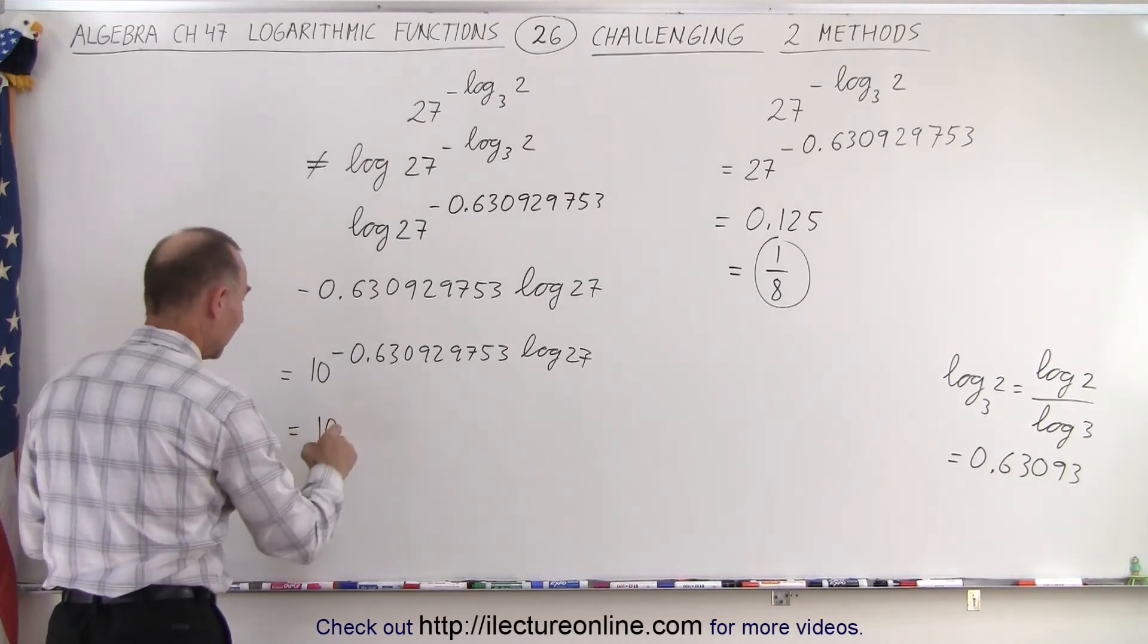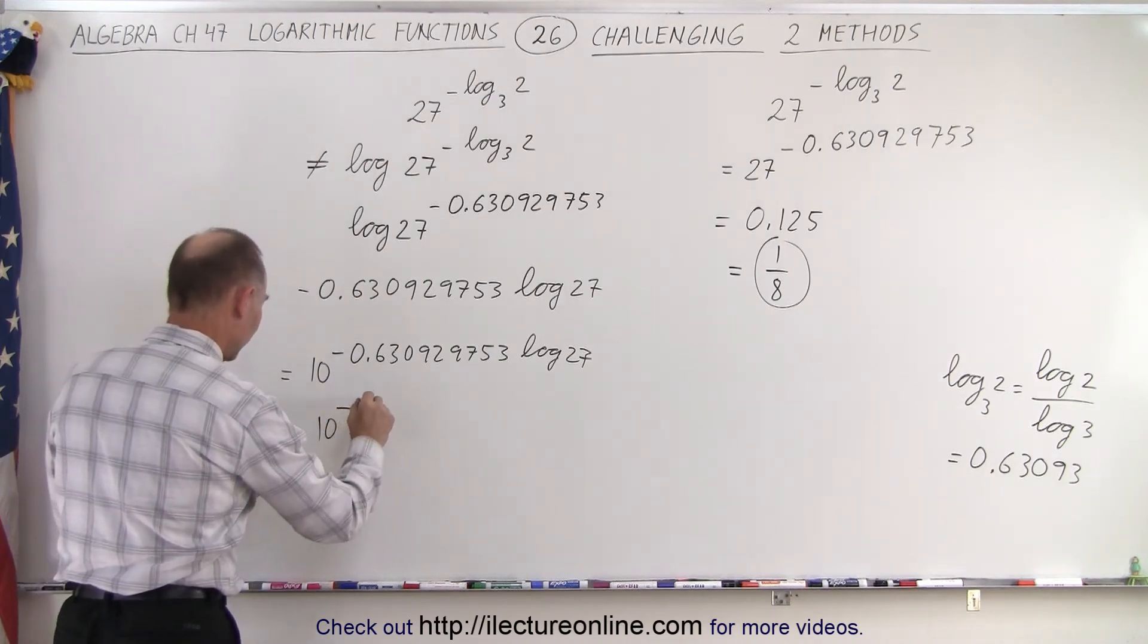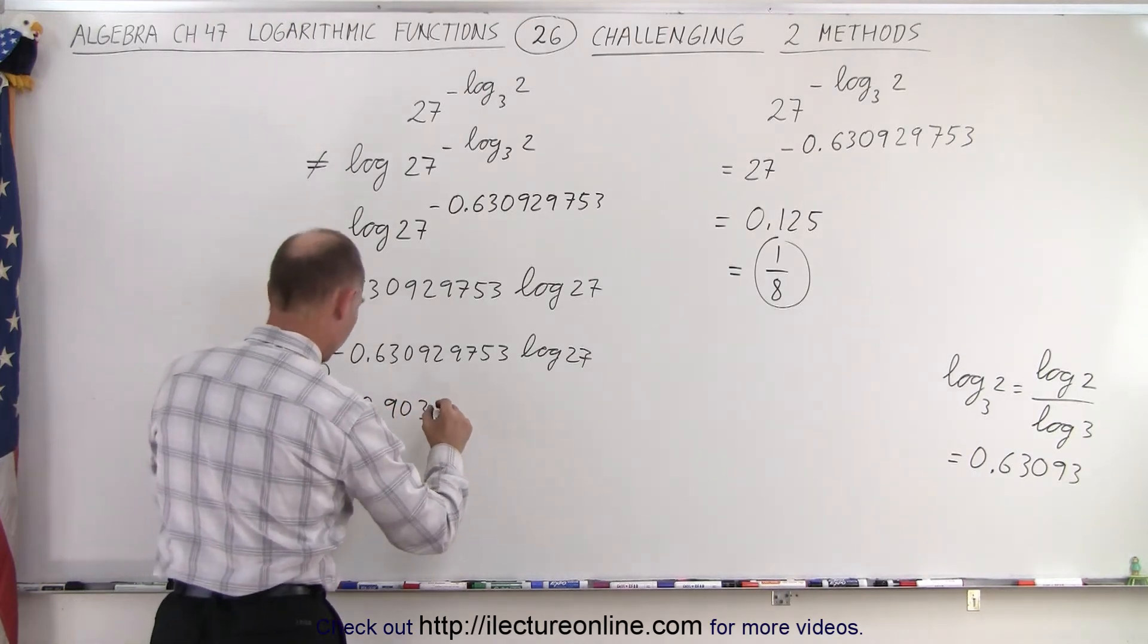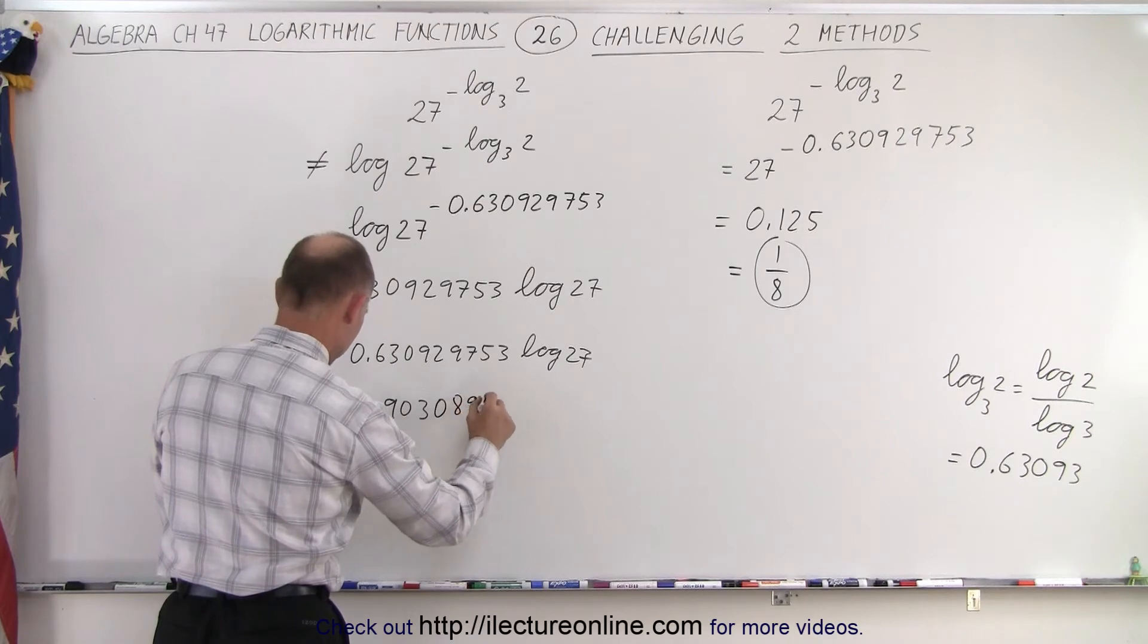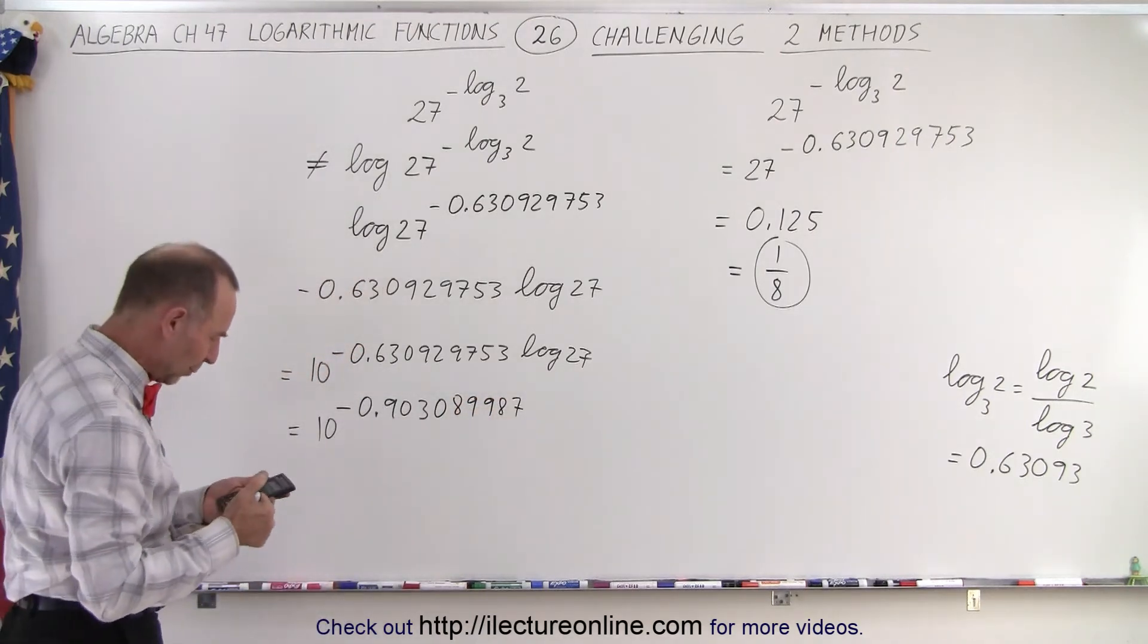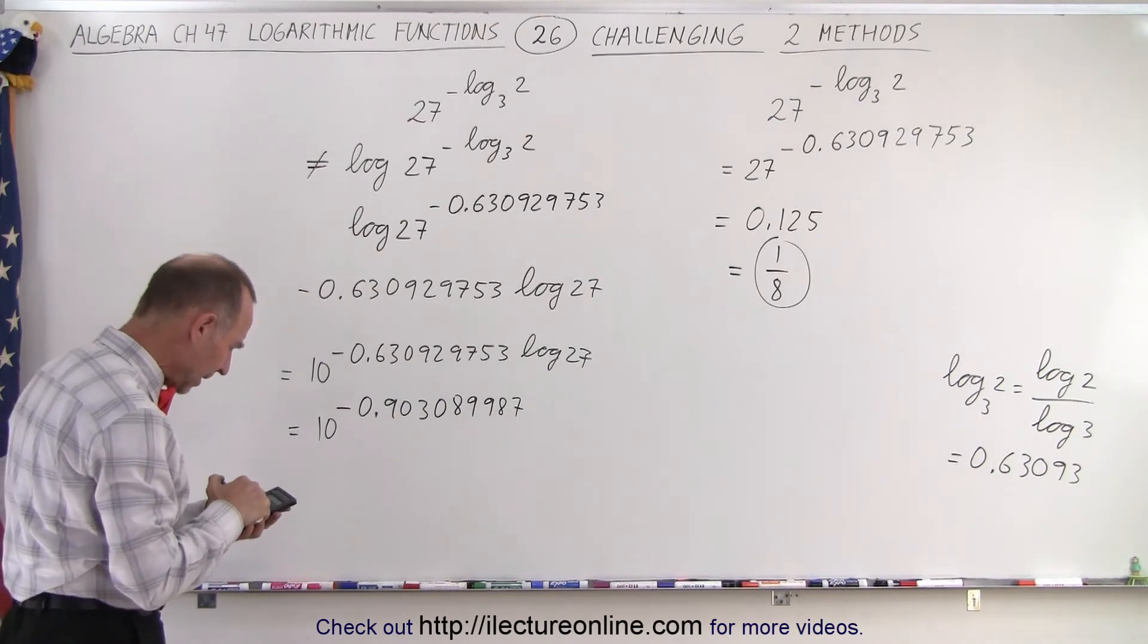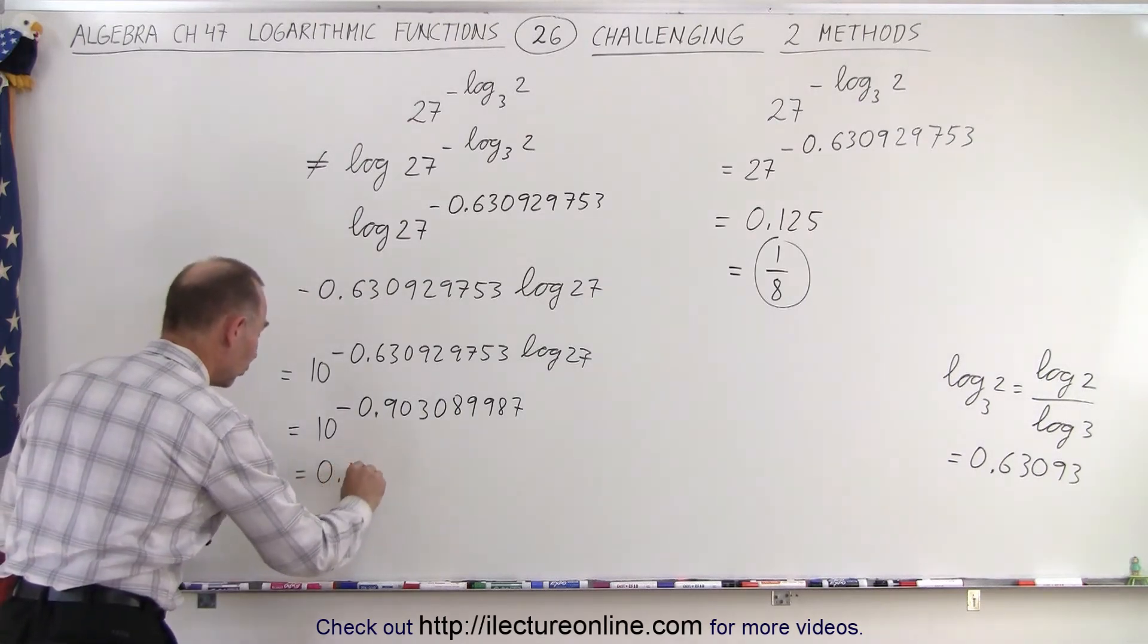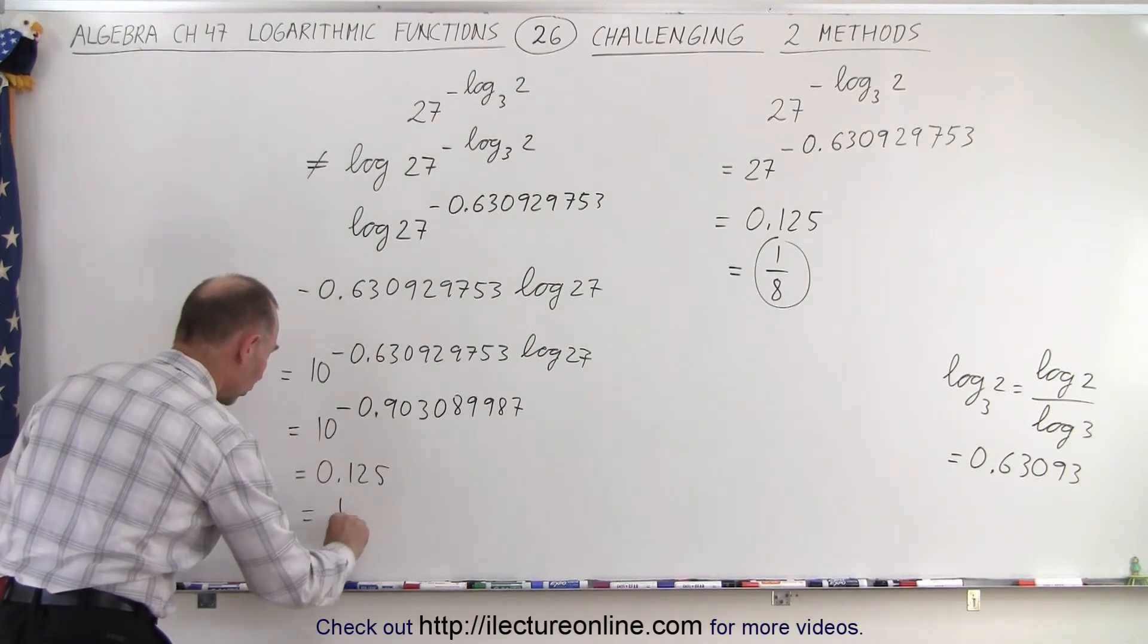this is equal to 10 raised to the negative 0.903089987. And now, when we take the anti-log of that, we get 0.125, which is 1 over 8.